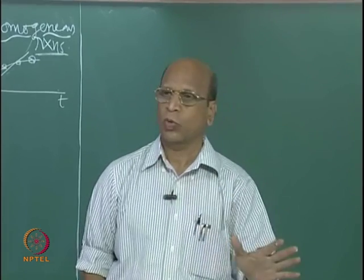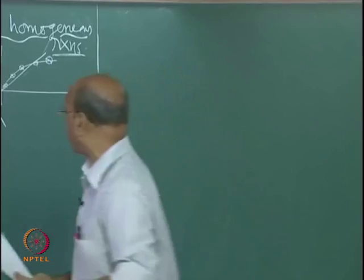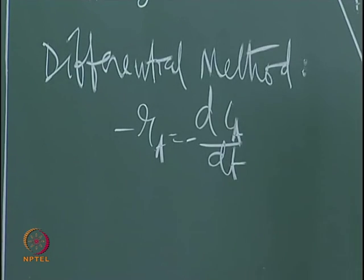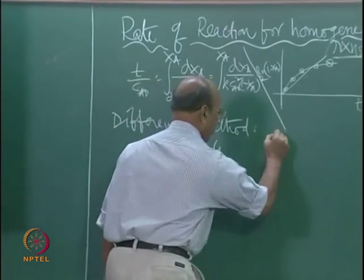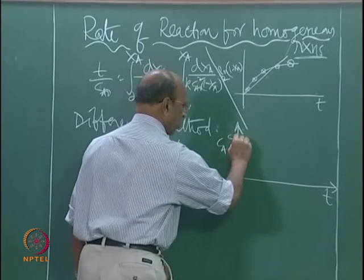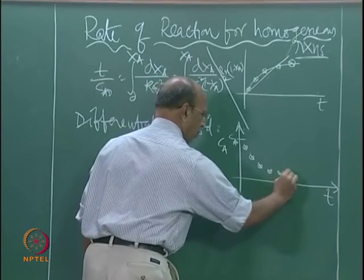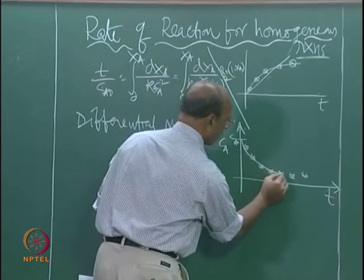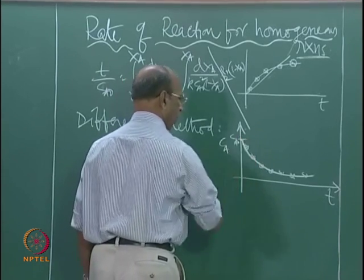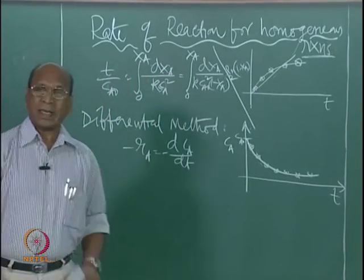But it is not correct for variable density systems. If you have a constant density system — liquid phase — then straight away minus R_A equals minus dC_A/dt. This is the constant density system assumption. So by measuring this dC_A/dt from a slope, where you have concentration versus time, this is C_A0 and because we are plotting for a reactant it decreases. The slope at any point will give you the rate. But again it is not that easy. How many of you have really drawn slopes and solved a problem that way?